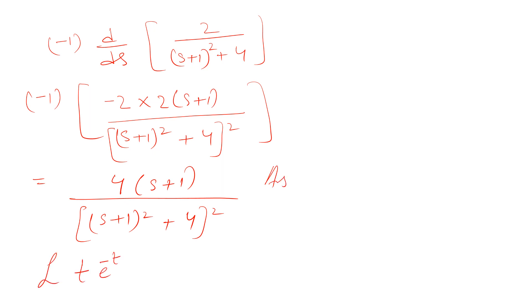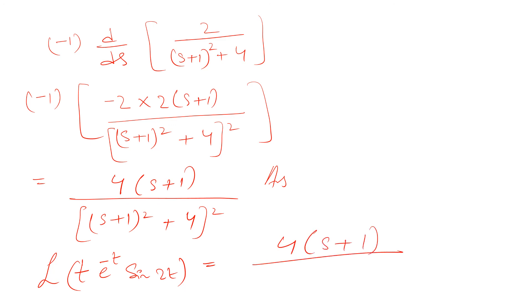So the Laplace transform of t·e^(−t)·sin(2t) is equal to 4 multiplied by (s+1), divided by [(s+1)² plus 4] whole squared.